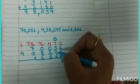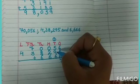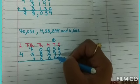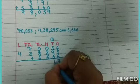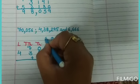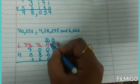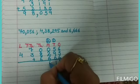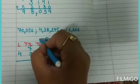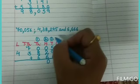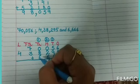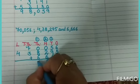5 plus 1 equals 6, 6 plus 9 equals 15, 15 plus 6 equals 21. Write 1, carry over 2. 2 plus 0 equals 2, 2 plus 2 equals 4, 4 plus 6 equals 10. Write 0, carry over 1.